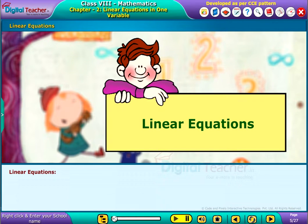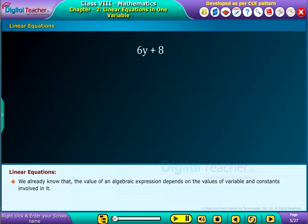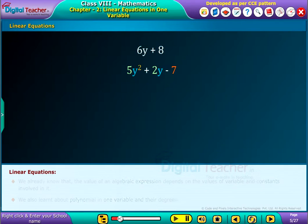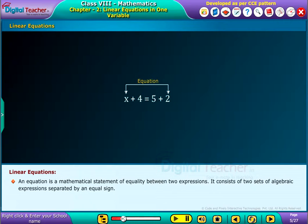Let us learn about linear equations. We already know that the value of an algebraic expression depends on the values of variables and constants involved in it. We also learned about polynomials in one variable and their degrees. Thus, a linear polynomial in one variable is that polynomial in one variable whose degree is one.